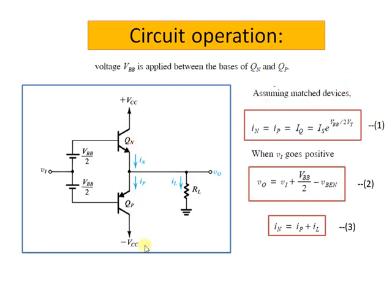Now assuming that the transistors used are perfectly matched devices, current IN and IP which is equal to the QN current is equal to IS e to the power VBB by 2VT. Why VBB by 2VT? Because the current voltage is usually e to the power VBE into VT, and here we have divided or applied the VB voltage to be equal to VBB by 2, that is why we have VBB by 2 into VT.